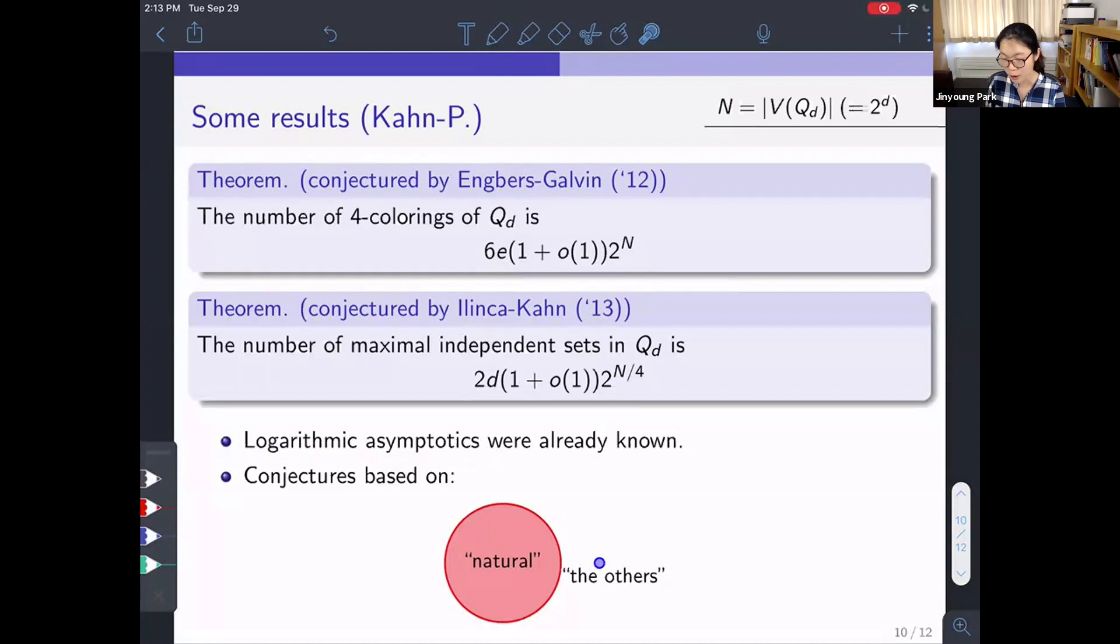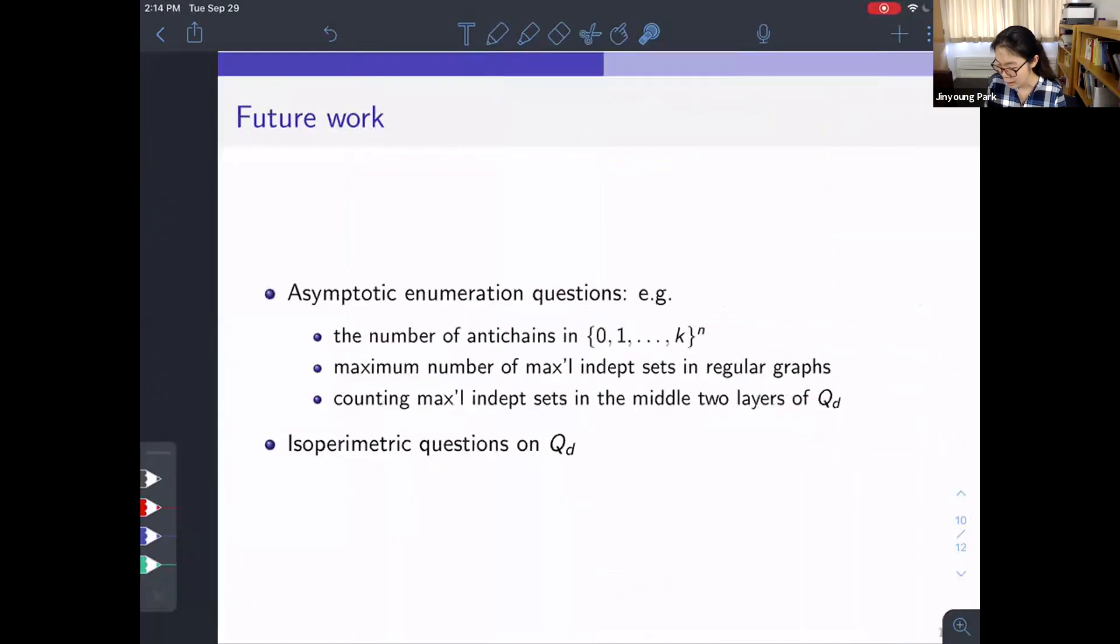The second point is this: the two questions were conjectures of Engbers-Galvin and Ilinca-Kahn respectively. And those conjectures were based on basically the same theme as counting independent sets. Mainly, here we want to estimate the size of some given family, and there is some natural soft family of this original family which is easier to estimate. And from this natural soft family, we have a lower bound. And people believed that this lower bound should be the truth. And what we showed was indeed the contribution from the other members of this collection is negligible. So this natural soft family is indeed the typicality of this original family.